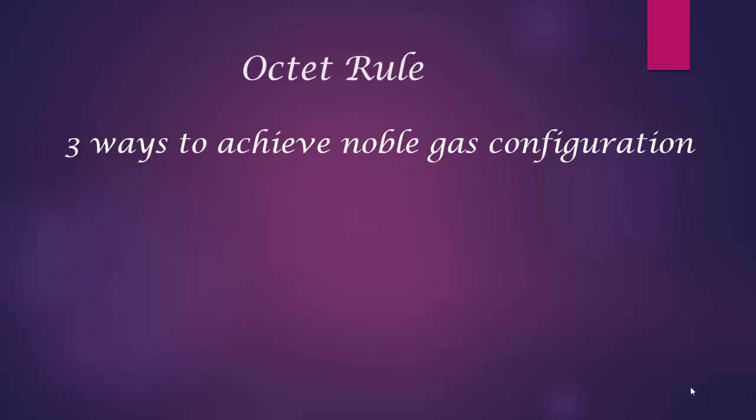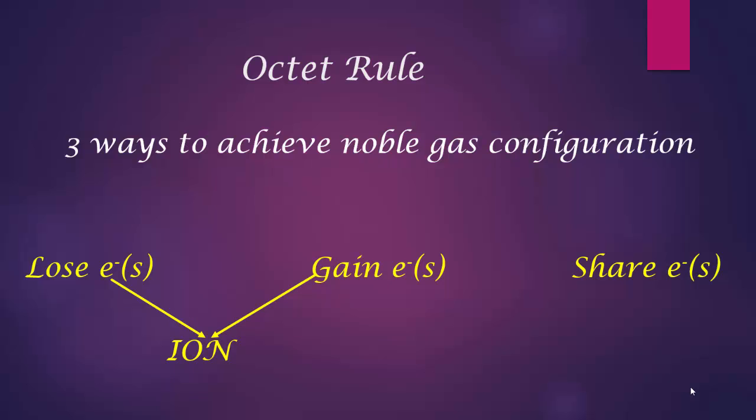Now, there are 3 ways to achieve noble gas configuration. You can lose electrons. You can gain electrons. Or you can share electrons. And when you lose electrons or gain electrons, you form an ion. And an ion is defined as an atom which is not neutrally charged. You have either more protons than electrons or more electrons than protons.